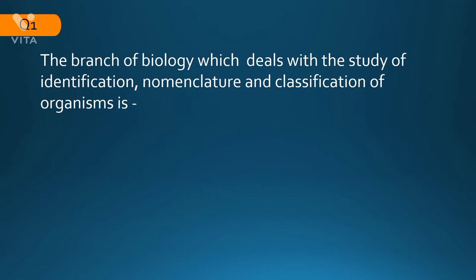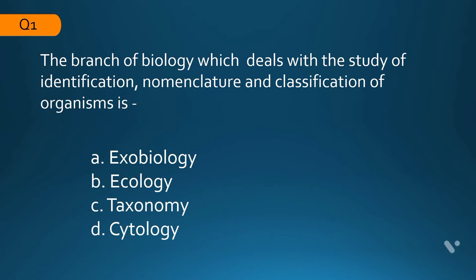The first question: the branch of biology that deals with the study of identification, nomenclature, and classification of organisms — meaning identifying an organism, naming it, and classifying it — which branch covers this? The options are exobiology, ecology, taxonomy, or cytology. You can pause the video to guess. The correct answer is taxonomy.